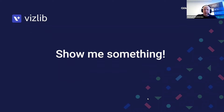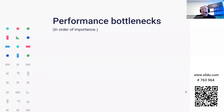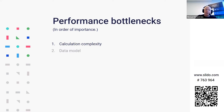Now to what this webinar is mostly about: the performance bottlenecks. The calculation complexity of any calculation in a measure is the most common problem we see with performance. Creating really complex measures will always be a struggle for the Qlik engine. The data model is another one — keep it as simple as possible and Qlik will calculate values faster. Especially avoid things like link tables or bridge tables, as they will be really bad for Qlik calculation performance.